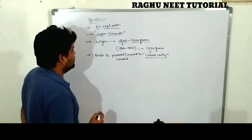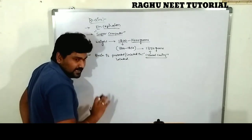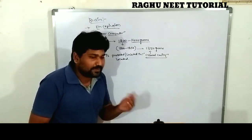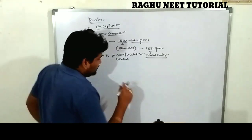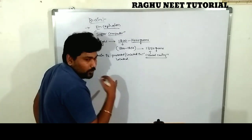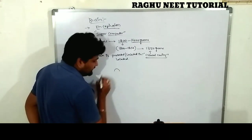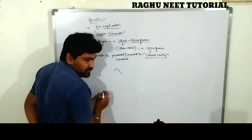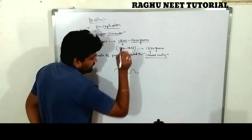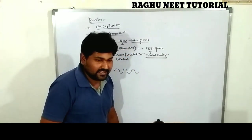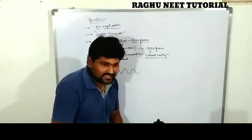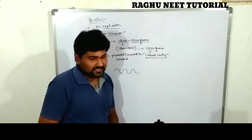The outer surface of the brain consists of more numbers of bulges and depressions. These bulges and depressions are called gyri and sulci. The bulges are known as gyri, and the depressions are called sulci.